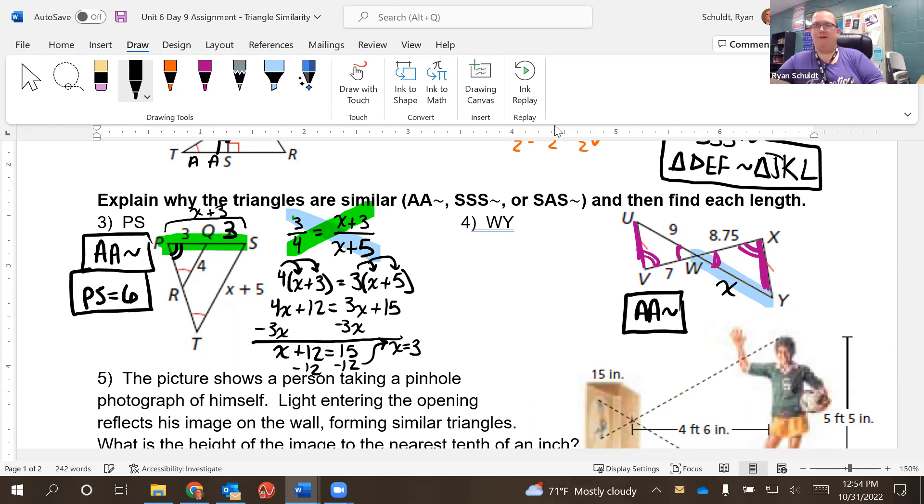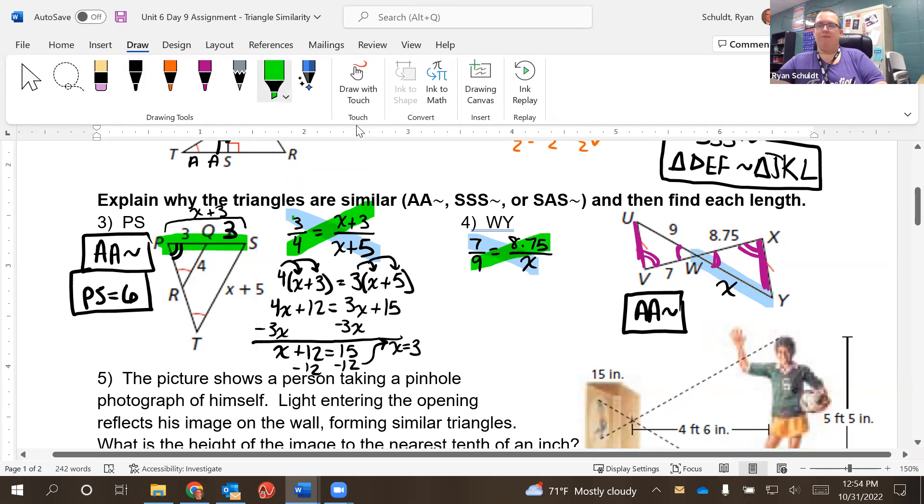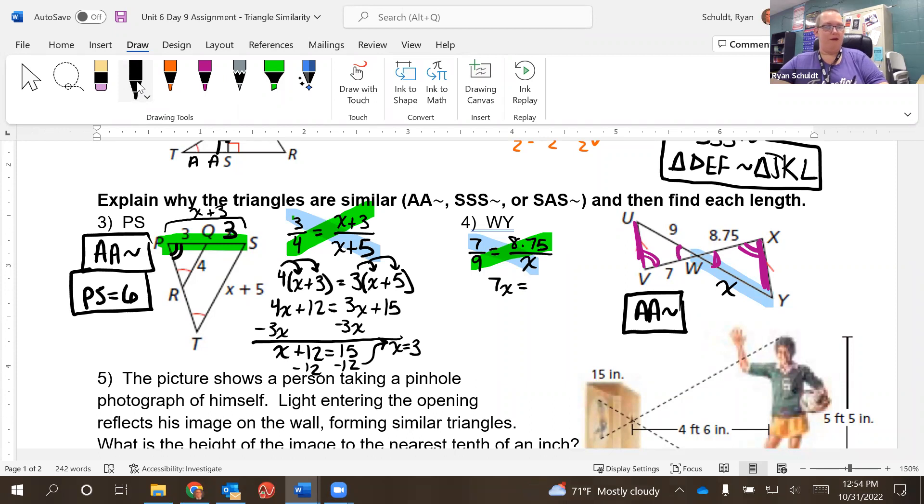So, yeah. Anyways, back on track. So I'm going to do seven over nine. Seven over nine. Seven was between the two markings. Go with the one between the two markings. Eight point seven five over X. So seven times X is equal to nine times eight point seven five. Nine times eight point seven five gives us 78.75. Divide by seven, and we get X equals 11.25, which since X is WY, this is what WY equals. 11.25.